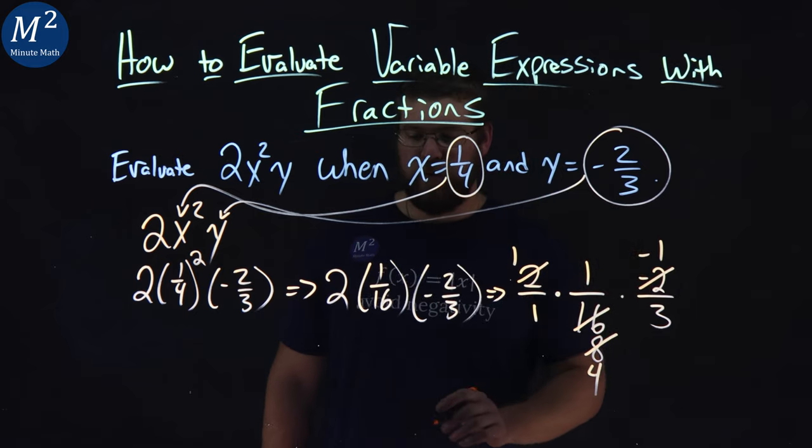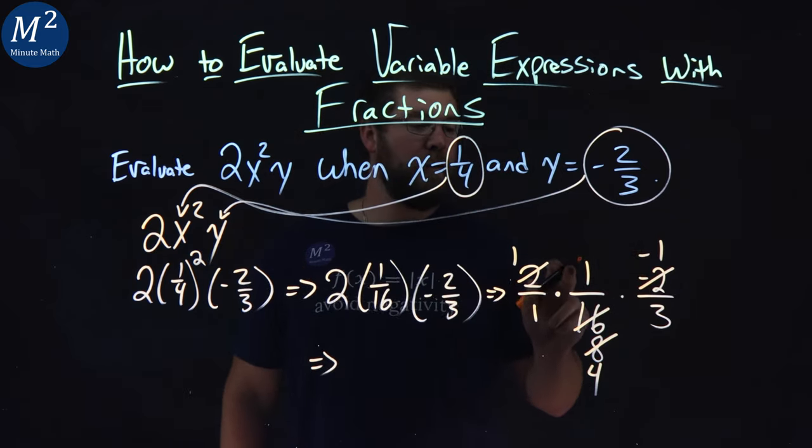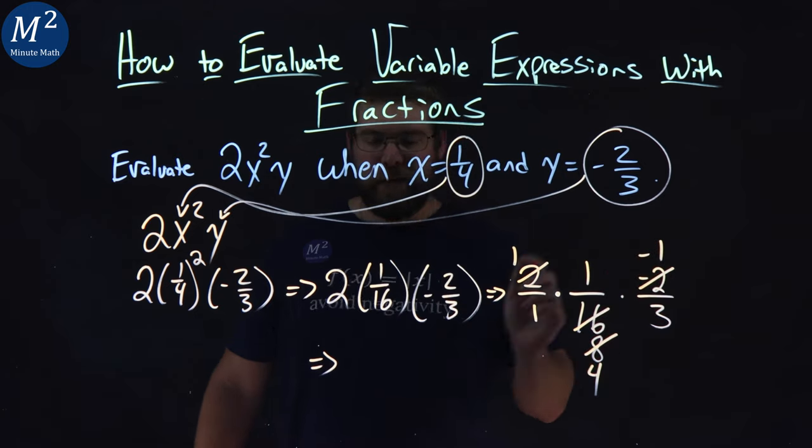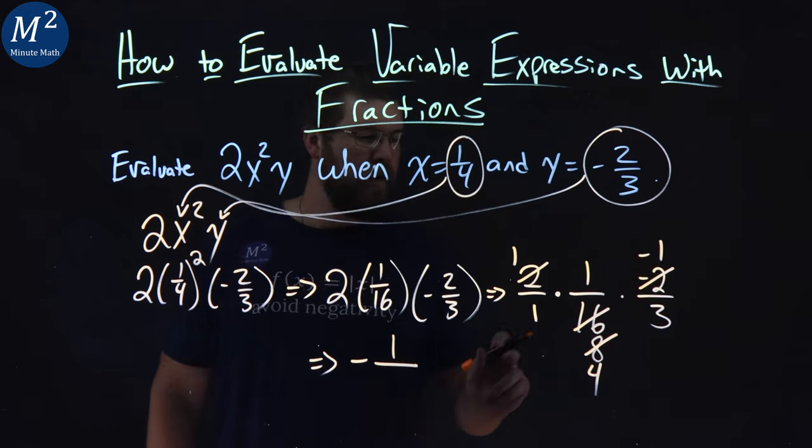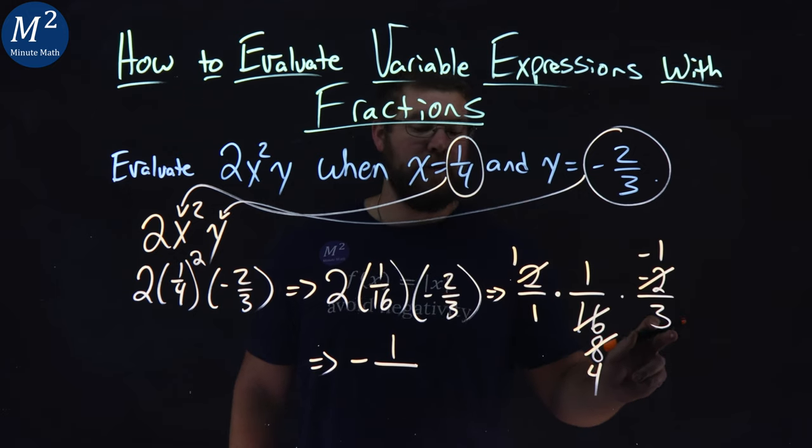Nothing else seems to simplify, so now what we do is multiply across the numerator. 1 times 1 times negative 1 is negative 1. 1 times 4 is 4, times 3 is 12.